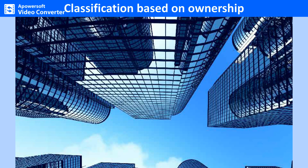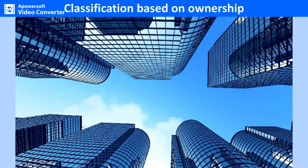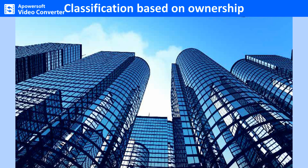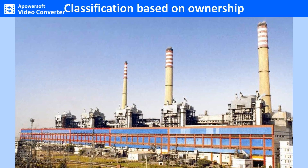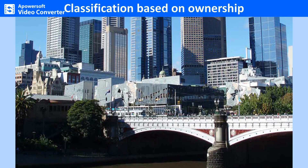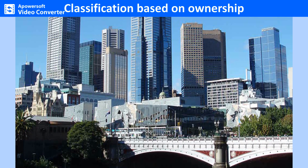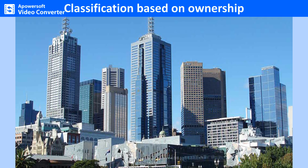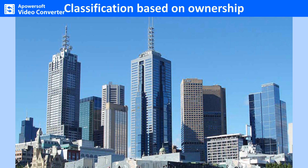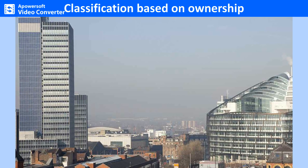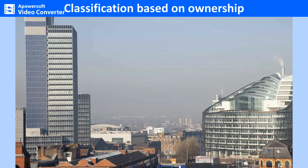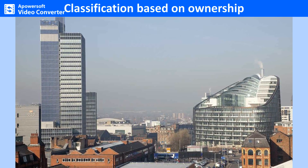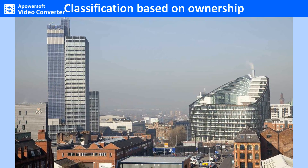Public sector enterprise: if an industrial establishment is owned, controlled and managed by the state, it is known as a public sector enterprise. The government makes all investments and the marketing of the goods produced is through government agencies. The Bharat Heavy Electrical Industries is a public sector unit. Joint sector enterprise involves an industry owned and managed jointly by the government and an individual or individuals. In India, some petrochemical units are joint sector enterprises. Cooperative sector enterprise: when a group of individuals pool resources to set up and manage an industrial venture on a cooperative basis, all profits and losses are shared among the members. Many textile units function as cooperatives.